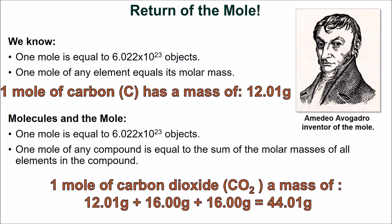How can we practically apply these laws to quantify chemical compounds? The answer is to revisit the mole. We know that one mole is equal to 6.022 times 10 to the 23rd objects, and one mole of any element is equal to its molar mass. The molar masses of each element are used to determine the molar mass of a compound, so one mole of any compound is equal to the sum of the molar masses of all elements in that compound. One mole of carbon has a molar mass of 12.01 grams per mole, and one mole of oxygen has a molar mass of 16.00 grams per mole. Carbon dioxide has one carbon and two oxygens, which means that one mole of carbon dioxide has a molar mass of 44.01 grams per mole.